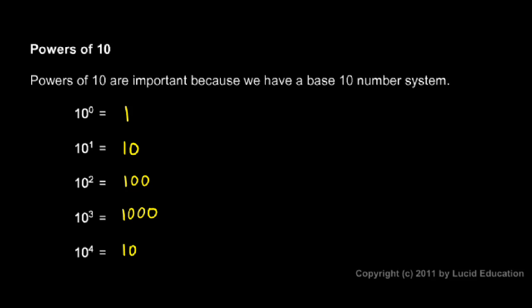10 to the power of 4 would be 10,000. And you get the idea. 10 to the power of 3 is a 1 followed by 3 zeros. 10 to the power of 4 is a 1 followed by 4 zeros, and so on.